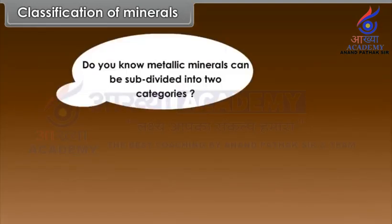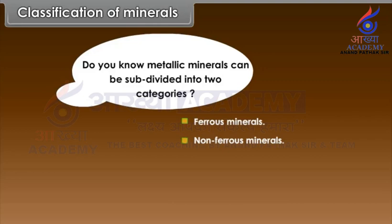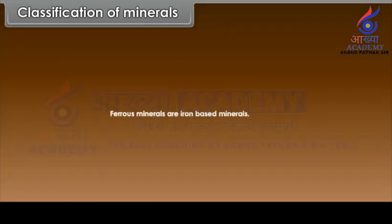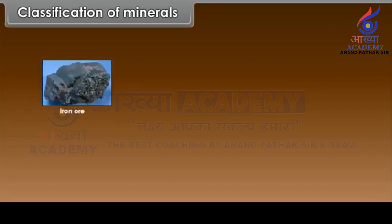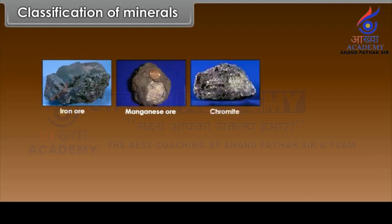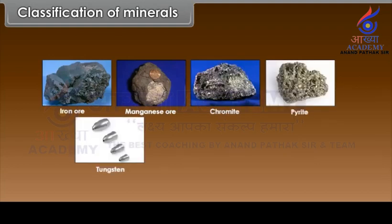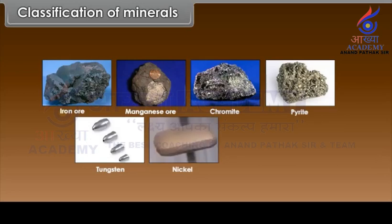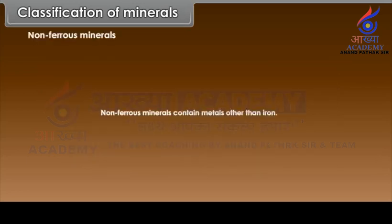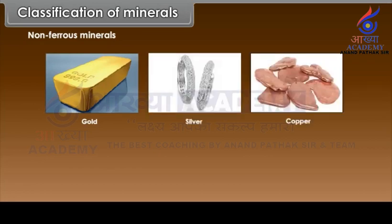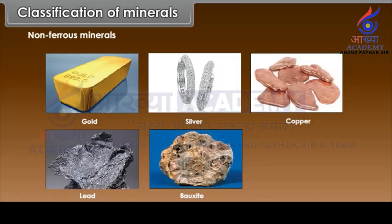Metallic minerals can be subdivided into two categories: ferrous and non-ferrous minerals. Ferrous minerals are iron-based minerals. Examples: iron ore, manganese ore, chromite, pyrite, tungsten, nickel, cobalt. Non-ferrous minerals contain metals other than iron. Examples: gold, silver, copper, lead, bauxite, tin.